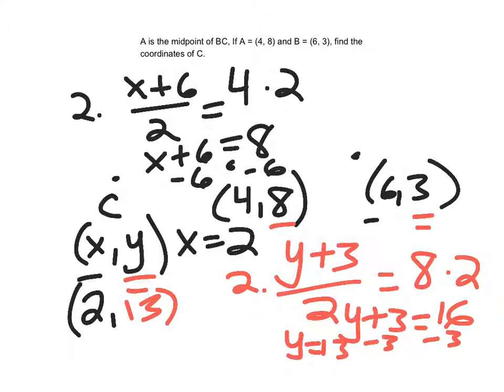So my midpoint then, or not my midpoint, because A is the midpoint. So my other endpoint would be 2, 13.